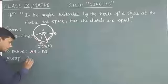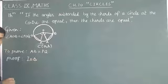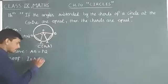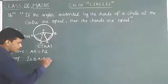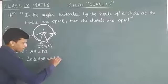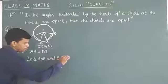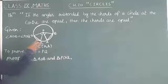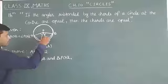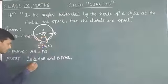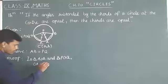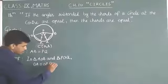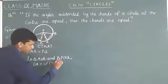In triangle AOB and triangle POQ, in these two triangles, OA equals OP and OB equals OQ. These are radii of the same circle.